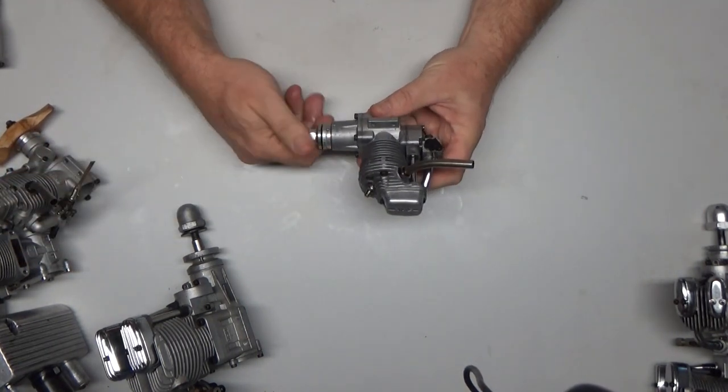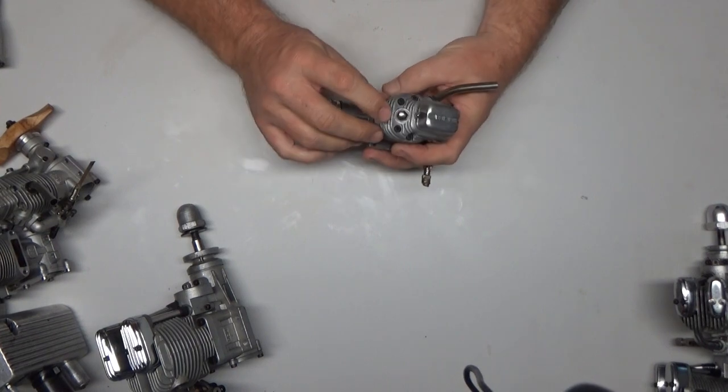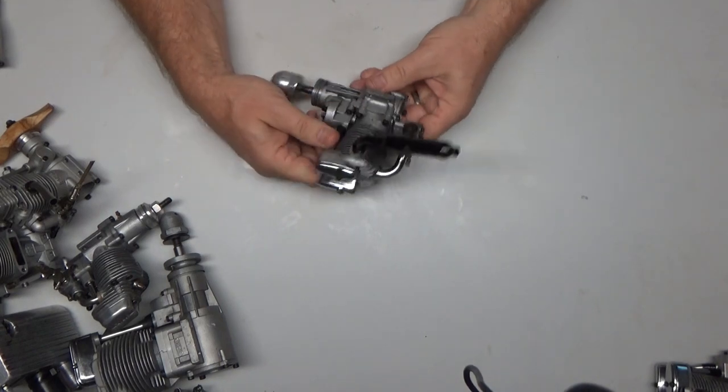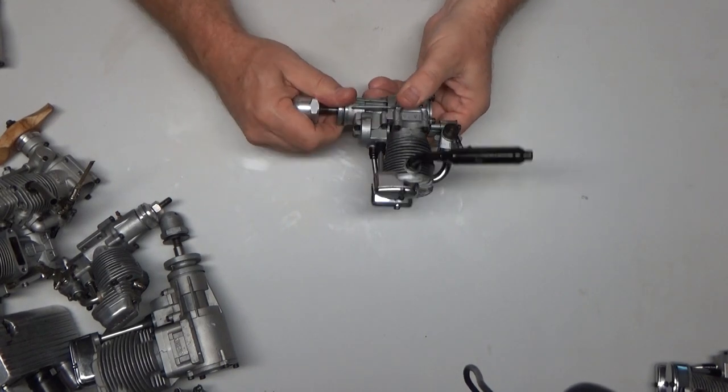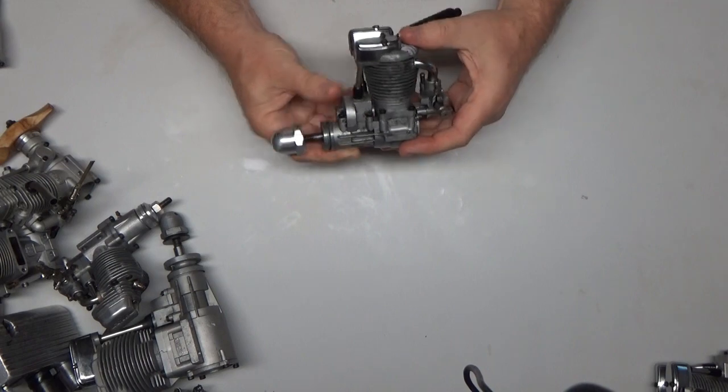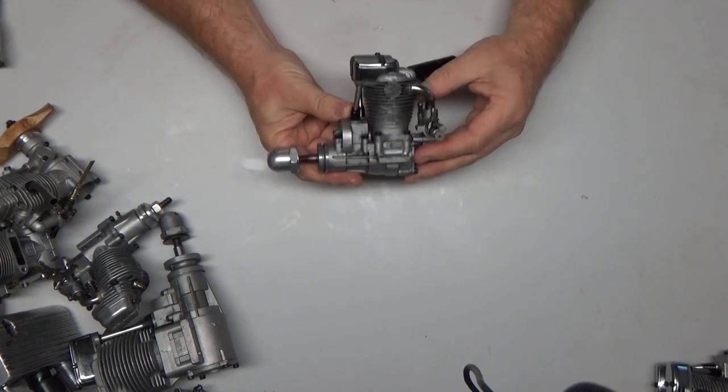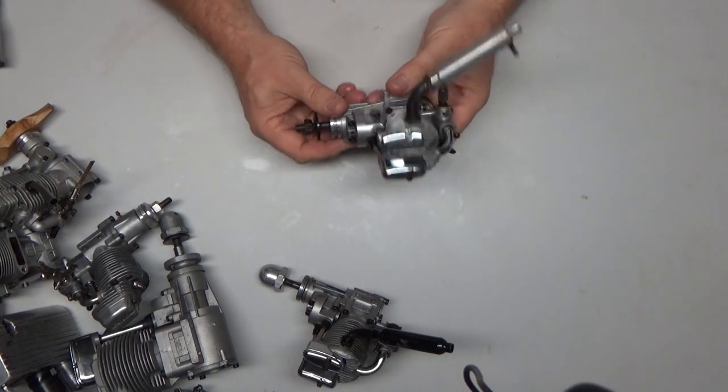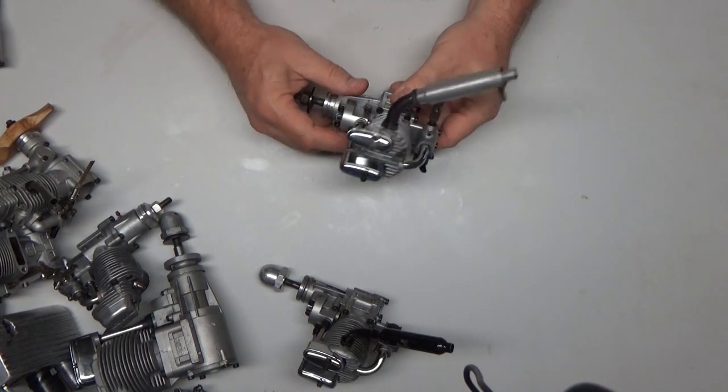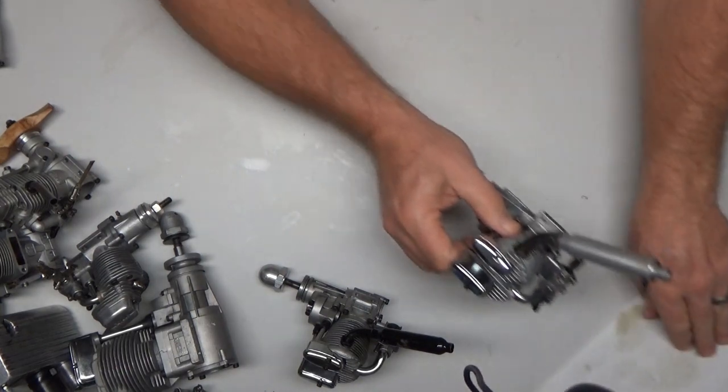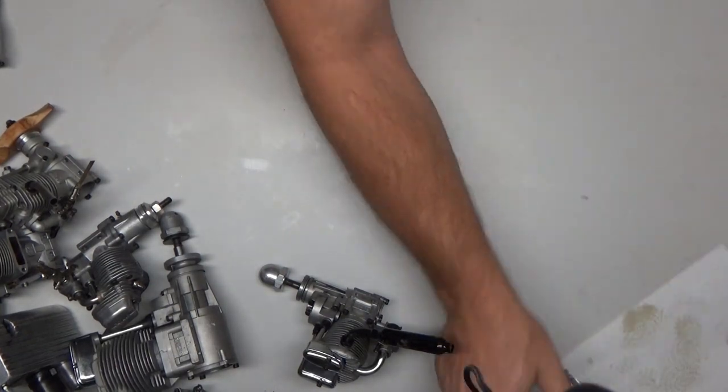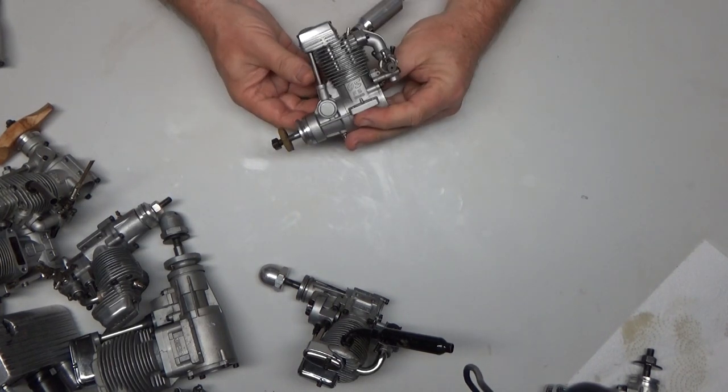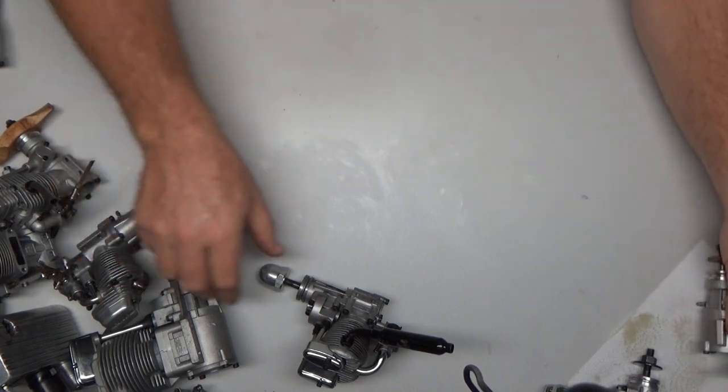Enya 46 four-cycle, nice runner. Saito 50 - this was a gold night, I mean this is the one that I stripped all the paint on. Saito 56, recent acquisition, just ran it today, still dripping oil profusely from filling it up. A couple more - OS 48 Surpass, very nice engine.